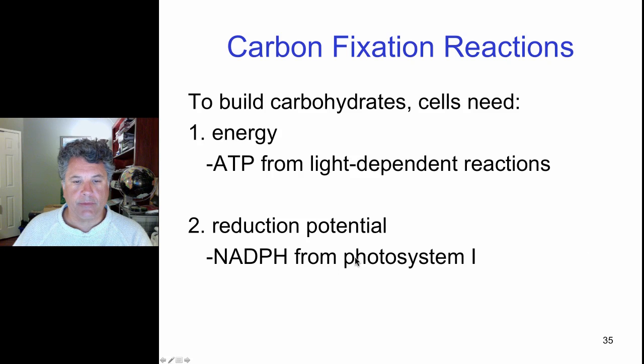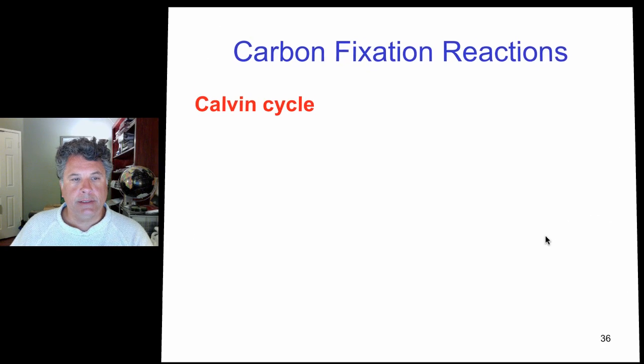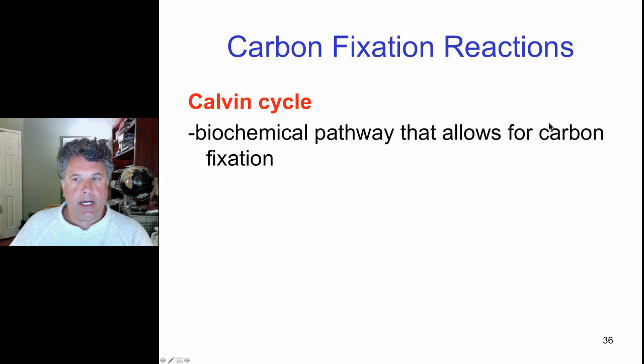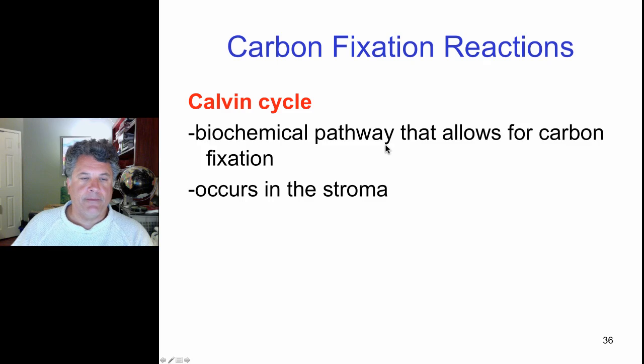And this comes from photosystem 1, as we have seen. So, what is the biochemical pathway that fixes carbon? It's called the Calvin cycle, named after Melvin Calvin, a plant physiologist. And this is the pathway that fixes carbon.